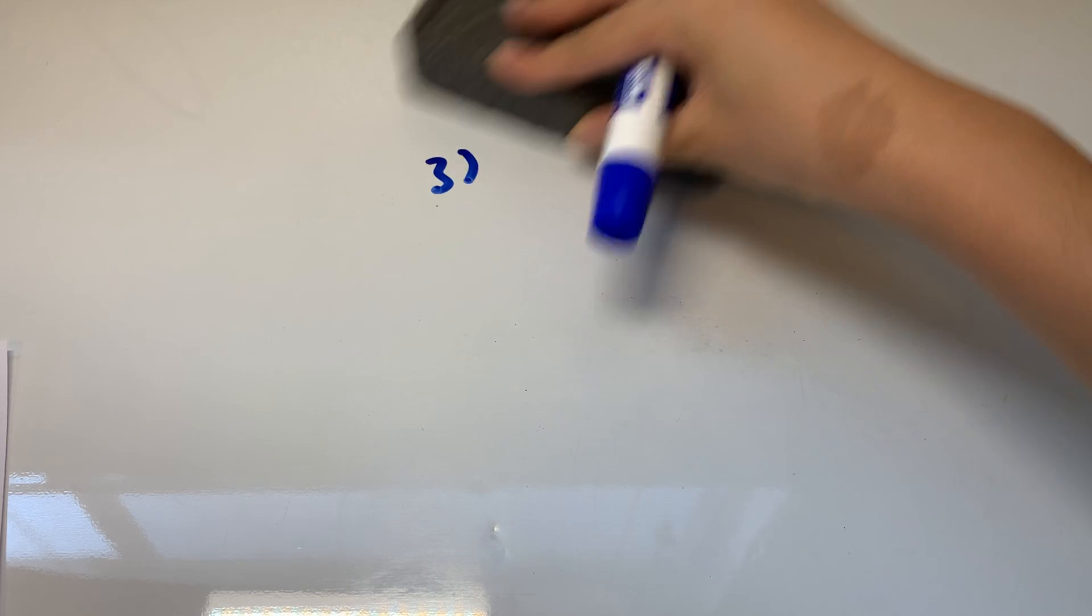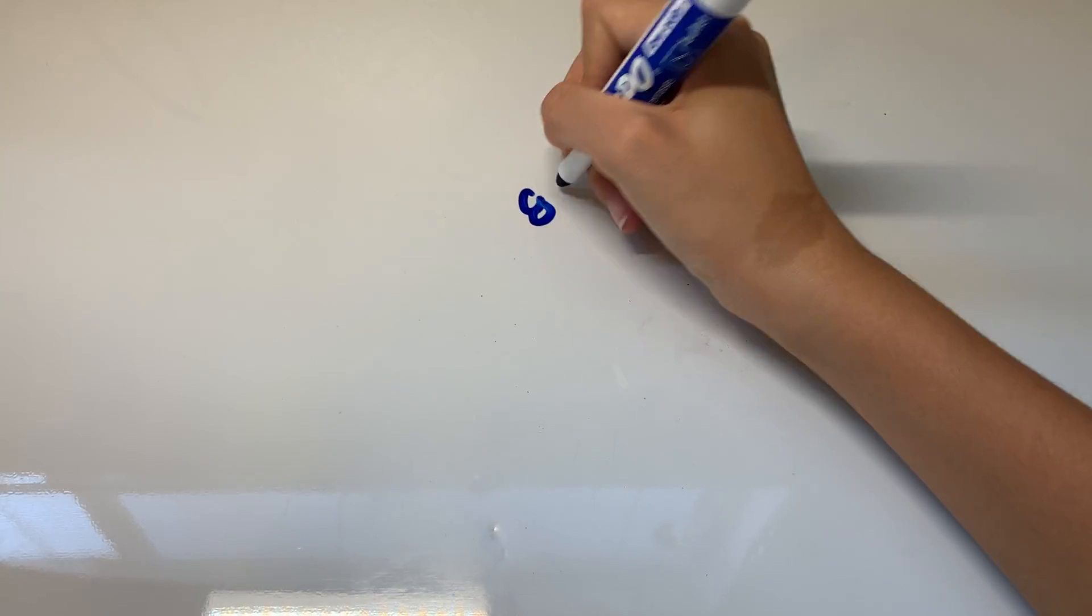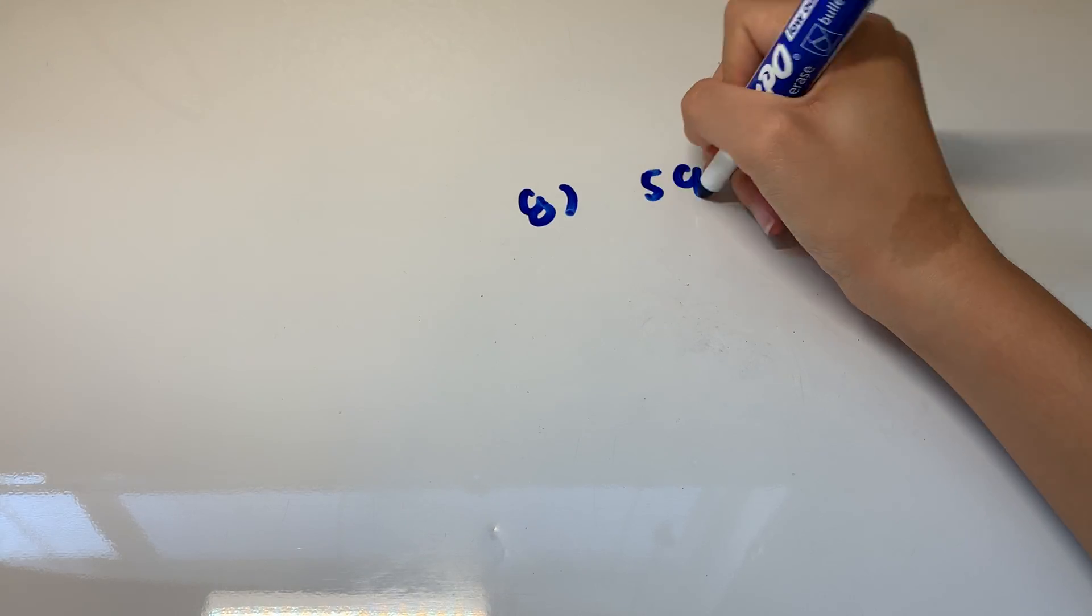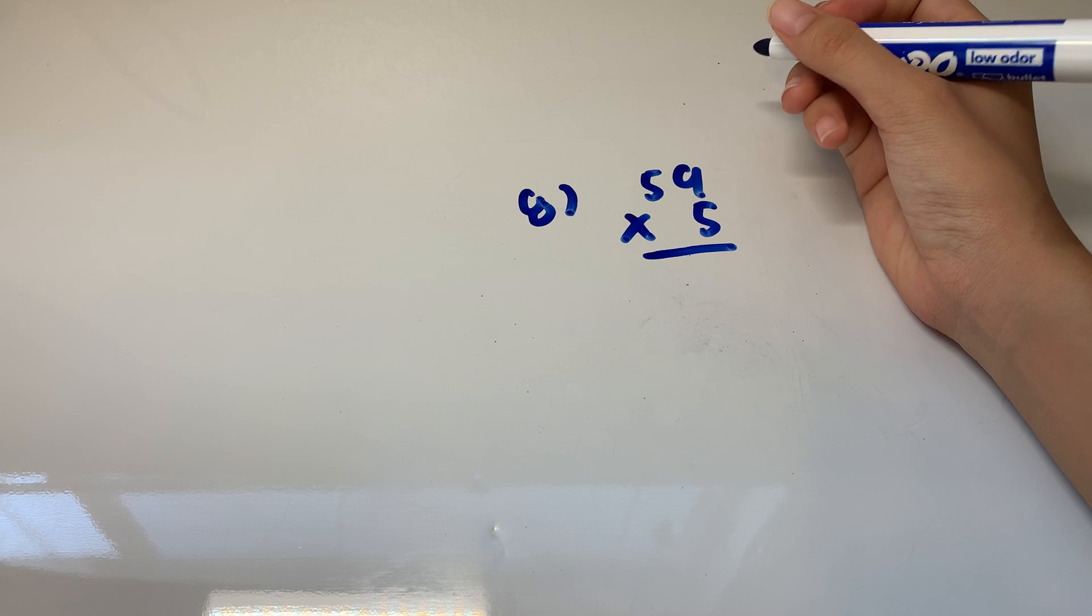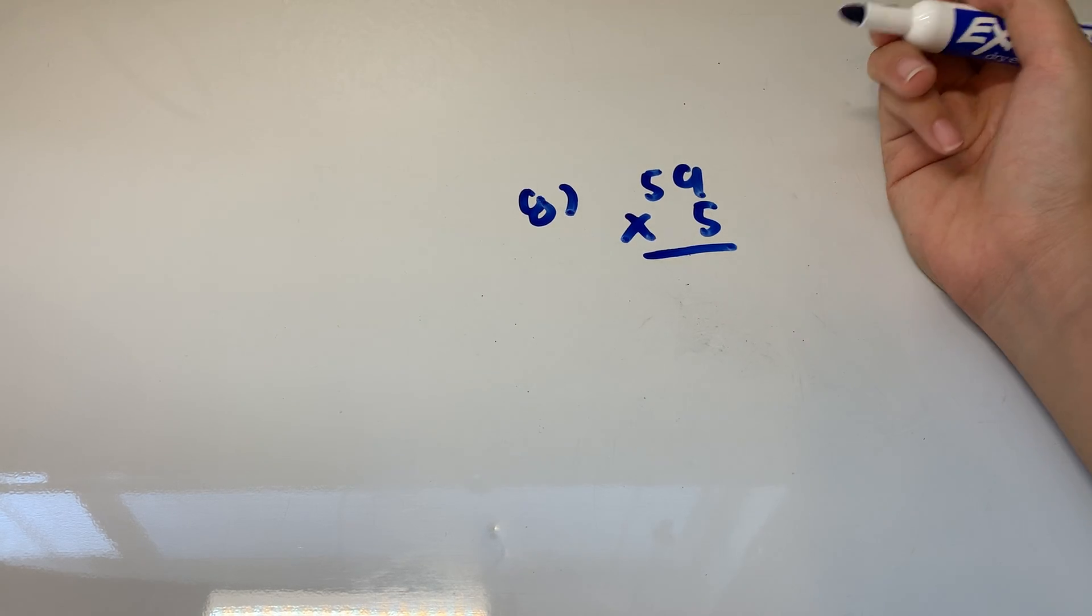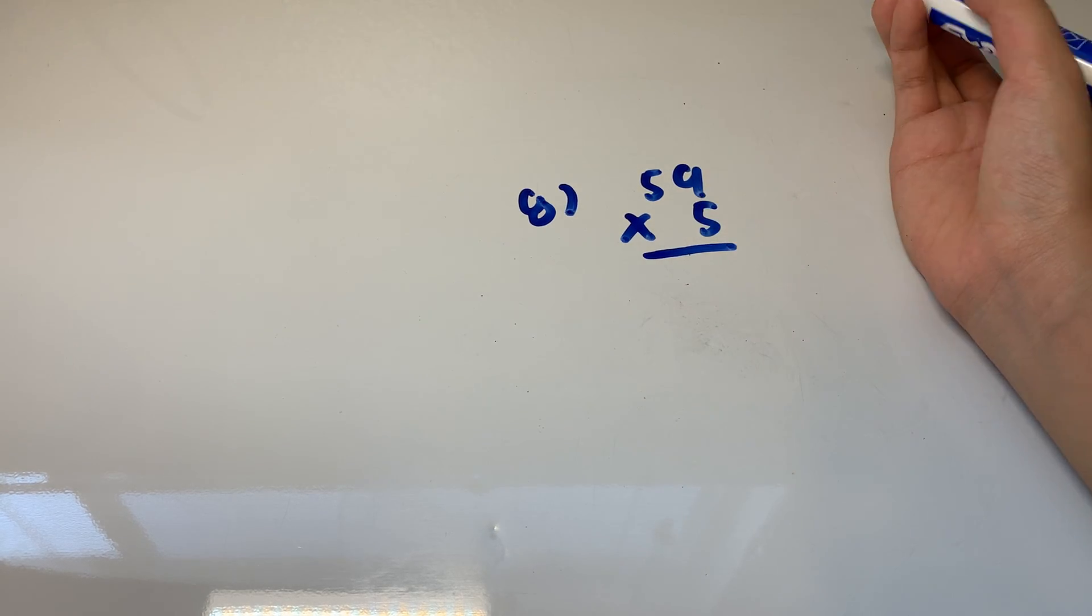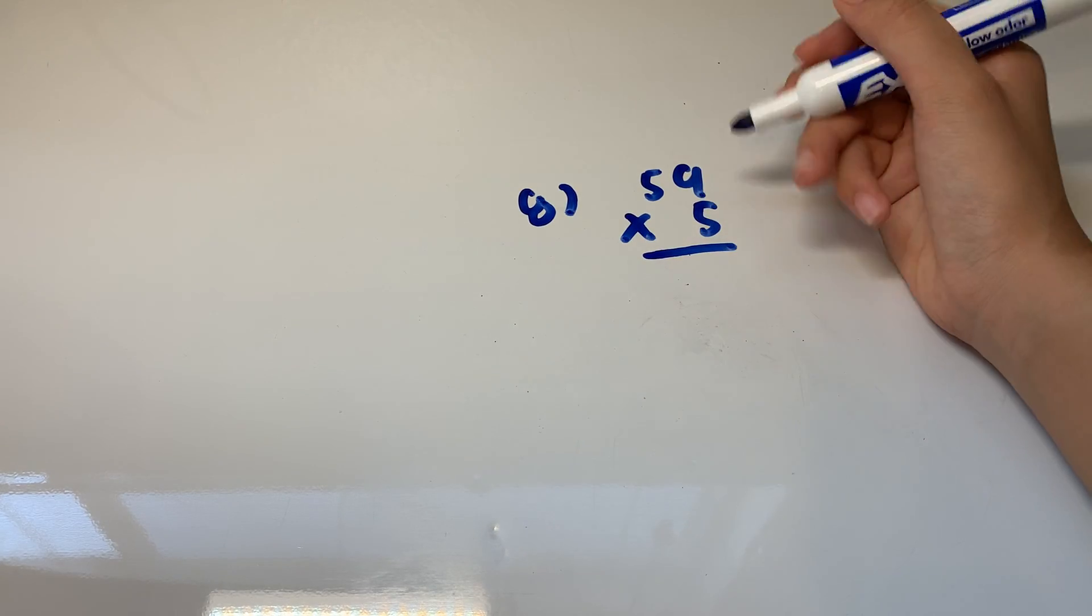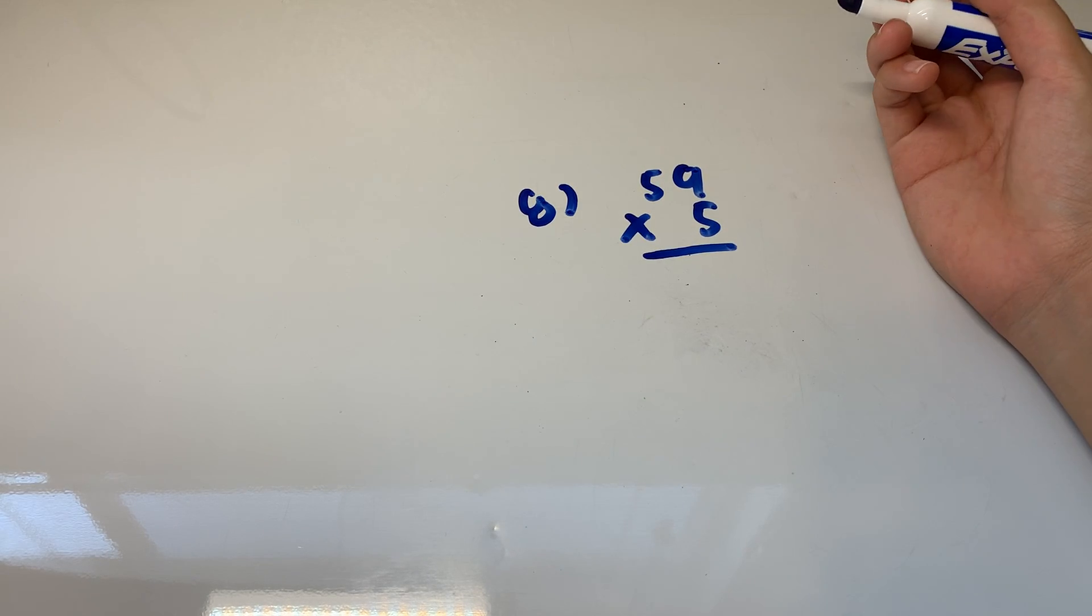So we're moving on to multiplication. We're going to start with number eight. So we're going to do 59 times five. We want to line them up again by the place values. So 59 has a tens place and a ones place and five just is the ones place. So we line them up by the place values. And once they are, we can just start multiplying. This is just like regular multiplication.